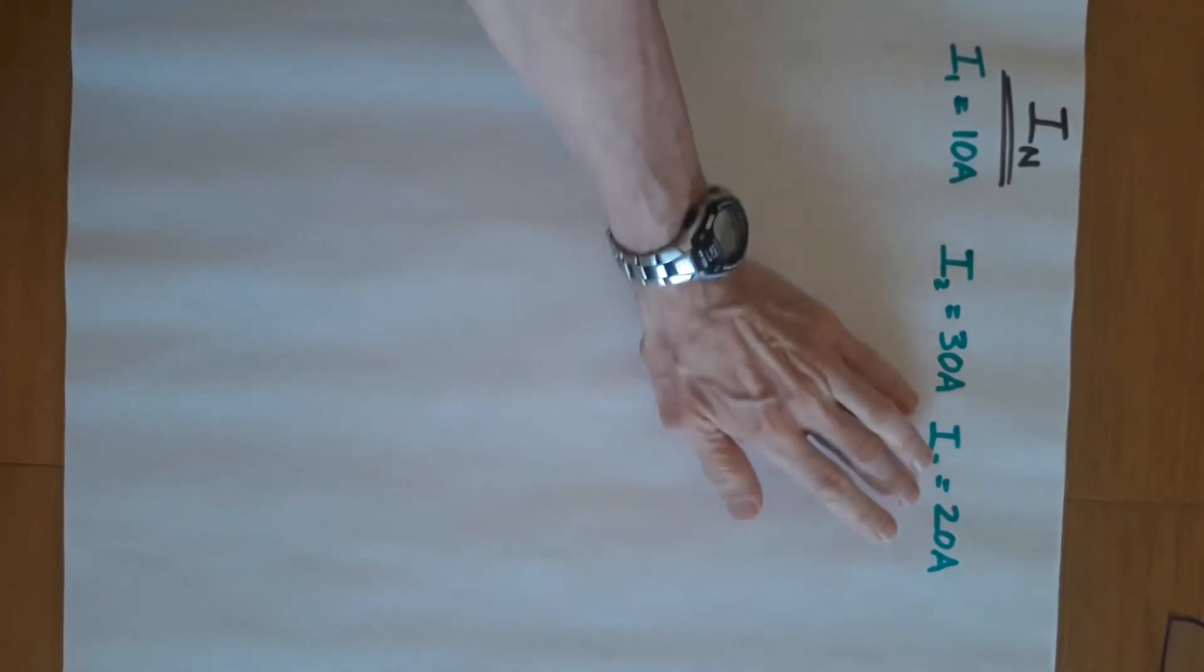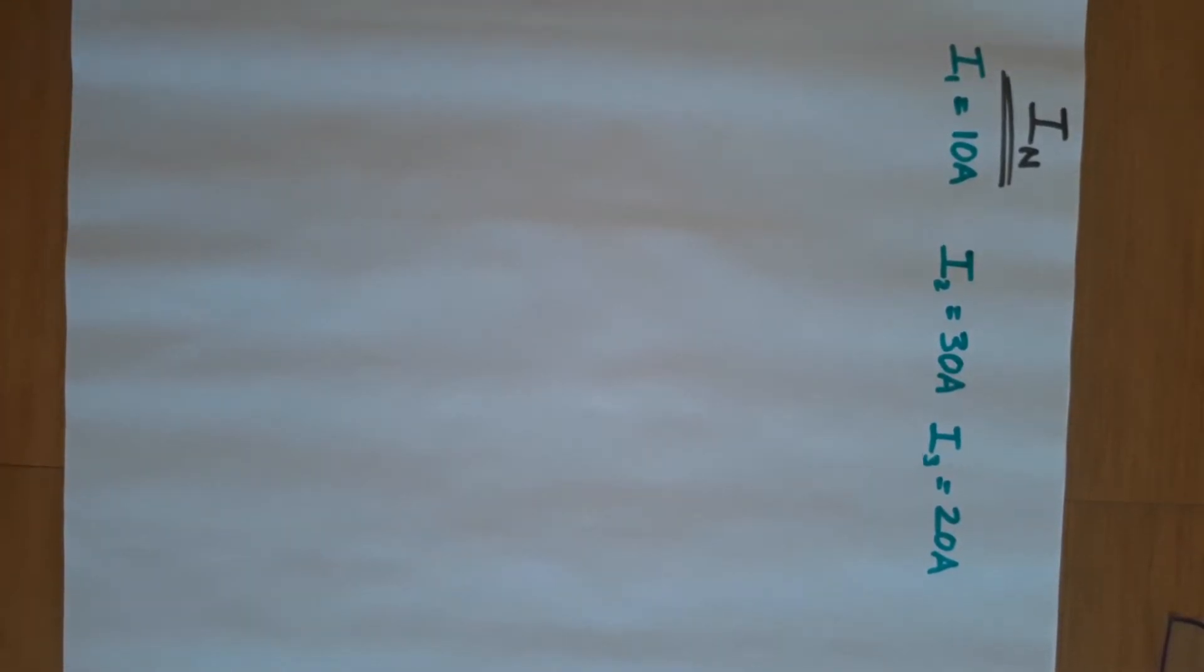So here I have three currents in a system. If we had the same current on each line, then we would have a balanced system and no neutral. But because we're out of balance, we have a neutral current.